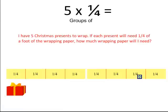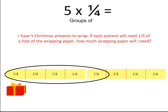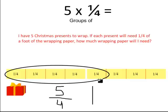A very basic model is to draw out the number of fourths needed. I would need 5 groups of a fourth, so literally 1, 2, 3, 4, 5 groups of fourths. The answer can be written as 5 fourths — the improper fraction — or 4 fourths, which equals one whole, and 1 fourth piece of the next whole: 1 and 1 fourth feet of wrapping paper to wrap all 5 Christmas presents.